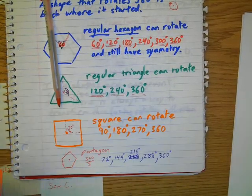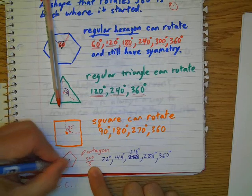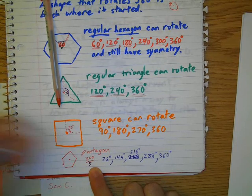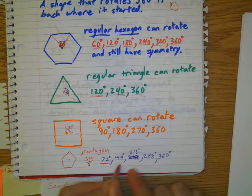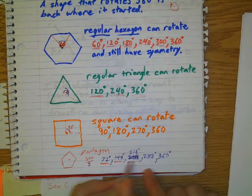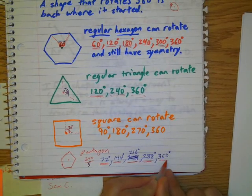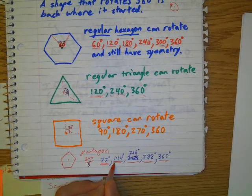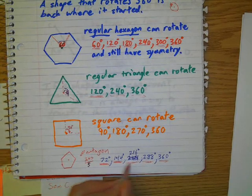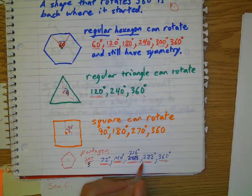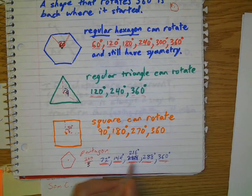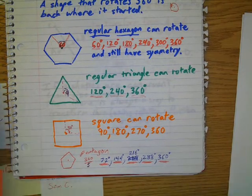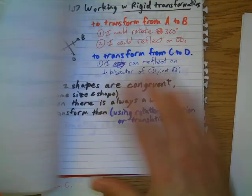So if I take 360 divided by the number of sides, then if I rotate it that amount, then I will get the shape back where it started. And I could do that as many times as the number of sides. So since there's five sides, I can rotate it five different possibilities in order to get it back to where it started.